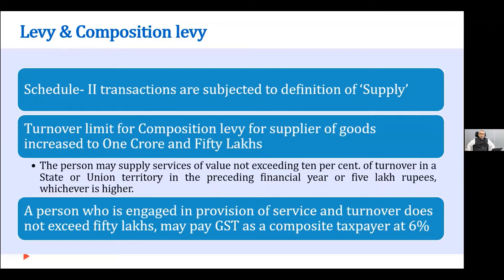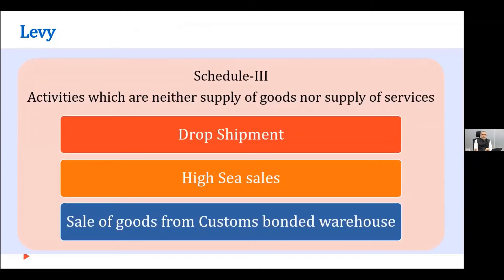Similarly, the turnover limit for composition levy for suppliers of goods and services has been increased to one and a half crores. The issue was whether this was only for goods or also for services. One amendment allows a person to supply services of a value not exceeding 10% of the turnover in the preceding financial year or 5 lakh rupees, whichever is higher. They also gave a concessional rate to persons engaged only in providing services where turnover does not exceed 50 lakhs — they can pay tax as a composite taxpayer at 6%.